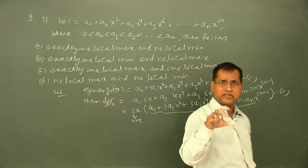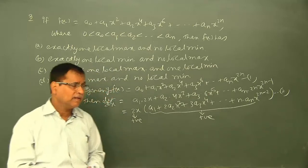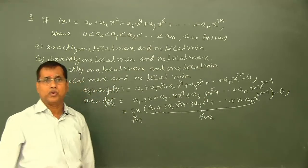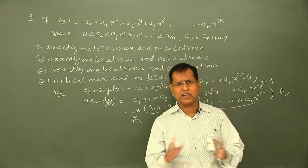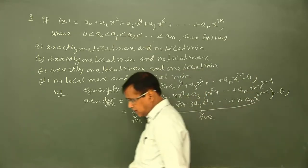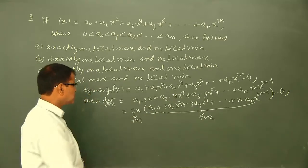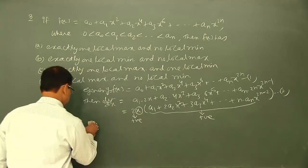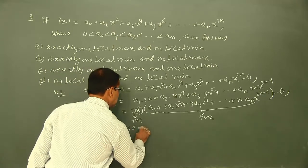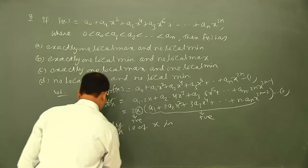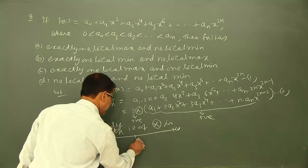We discussed that when writing the sign scheme of an expression, positive factors in the numerator and denominator can be ignored, because multiplying or dividing by a positive number does not change the sign. So for the sign of dy/dx, we only need to find the sign of x. Sign of dy/dx = sign of x.